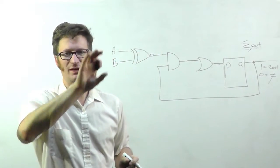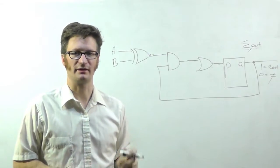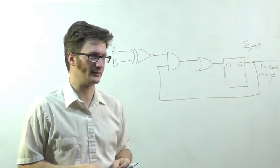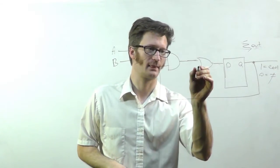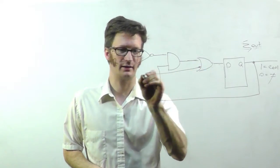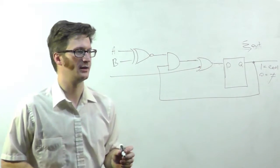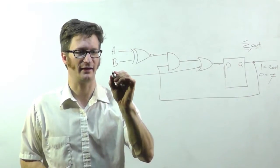A and B need to come in with the least significant bit first. Finally, for the OR gate, I'm going to run an input in here. And this is a reset.